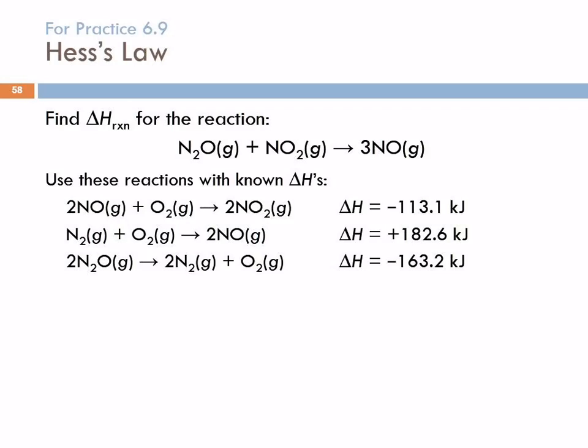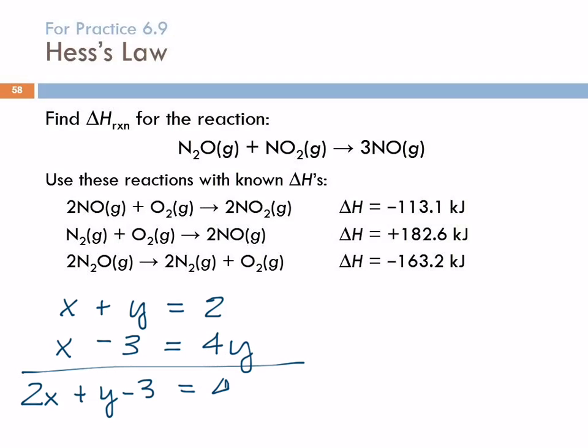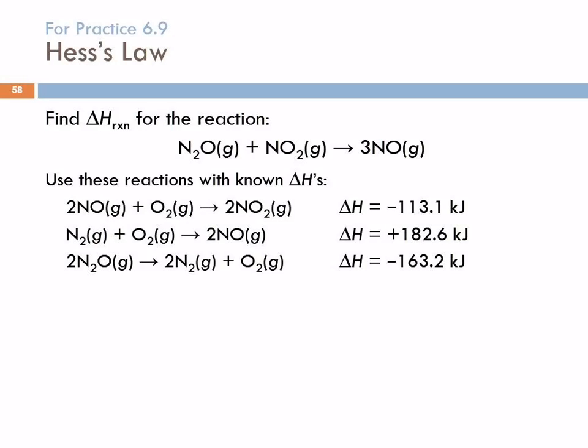You can add chemical equations just like you can add mathematical equations. So let's add a math equation first. So if we have x plus y equals 2, and x minus 3 equals 4y, perhaps. I was making this up. We can add those together. So we've got x plus x. That's going to be 2x. And then we've got plus y and minus 3. And then over here, we've got 4y and 2. And then we've got 4y's on this side and 1y on that side, so we can get rid of that and change this to a 3. Do you remember doing something like that in math class? Some vague recollection, perhaps.